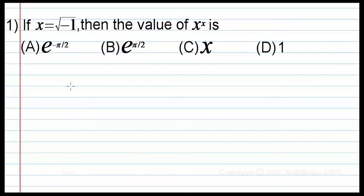If x equal to square root of minus 1, then the value of x power x is. The options given are e power minus pi by 2, e power pi by 2, x, and 1.